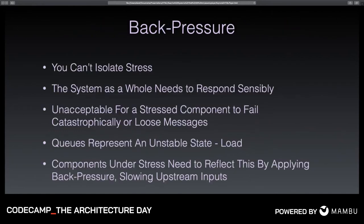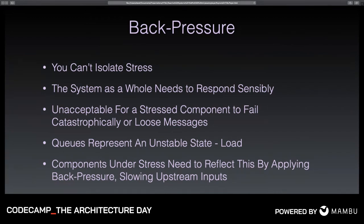You can't isolate stress, so you need back pressure. If a component has too many incoming messages, it needs to signal upstream that the system is under stress and the message rate needs to slow down — ultimately communicating back to the user. A classic anti-pattern in high-performance systems is just increasing queue sizes when the system is under load — all that does is delay the time at which things fall over. You can't build resilient systems with unbounded queues. Back pressure is a key idea of resilience for reactive systems.